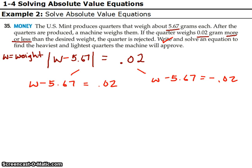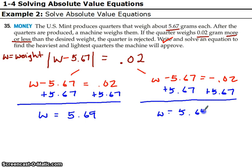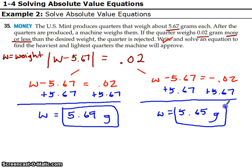So this is a one-step problem. Add 5.67 to both sides. W equals 5.69. And over here, we're going to add 5.67 to both sides. And we get W equals 5.65. And that's the heaviest and the lightest. These are in grams, so make sure to put your units, the heaviest and the lightest that a quarter can be and not be rejected.